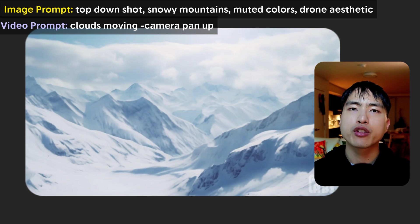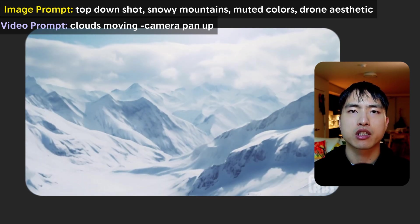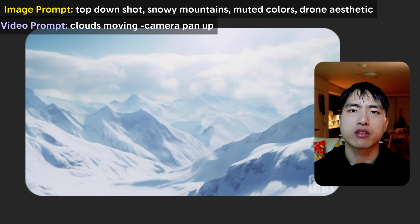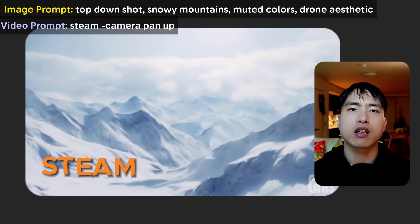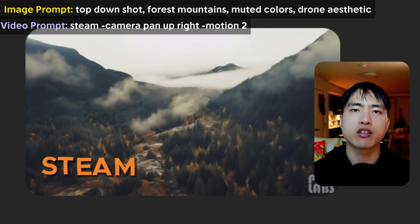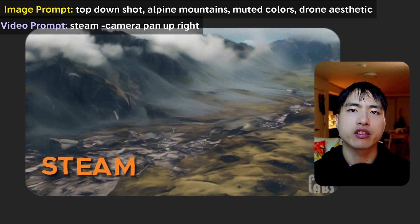One thing that was hard to generate was the movement of clouds. The AI model was pretty stubborn when it came to animating clouds drifting around — they mostly just stay still. If you try using words like 'clouds moving' in your prompt or something similar, that doesn't really work well. Instead, use the keyword 'steam' if you want to get the clouds to start drifting around in your videos. Pika Labs sometimes has weird word associations.